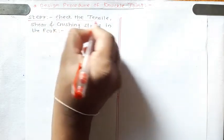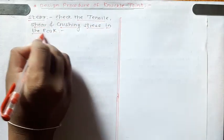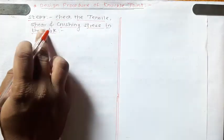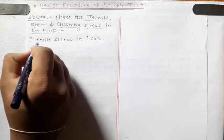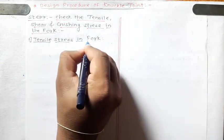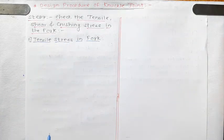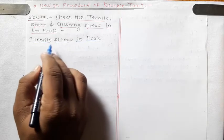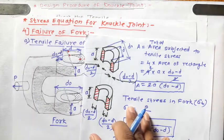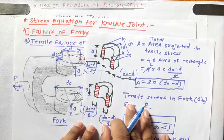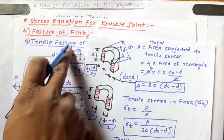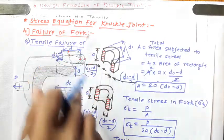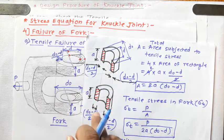The last step in the design procedure of the knuckle joint is step number seven: check the tensile, shear, and crushing stress in the fork. Referring to the previous article on stress equations for the knuckle joint, we examine the failure of the fork. The first stress is tensile failure of the fork — two fork ends are subjected to tensile failure due to tensile stress.